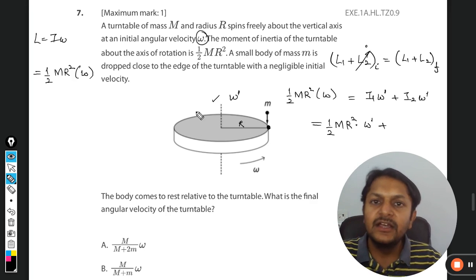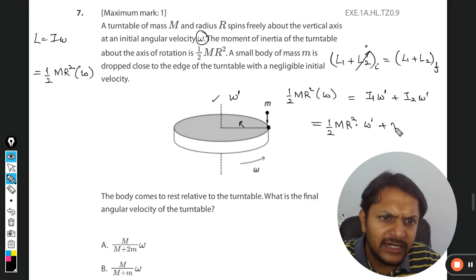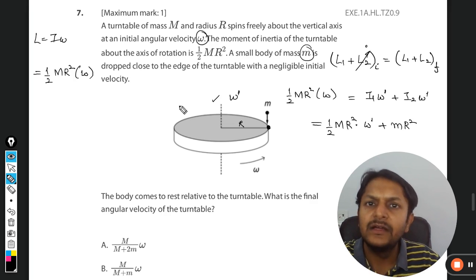around this axis. Thereby we can say that the formula for the moment of inertia will be very simple, which is mR². So this can be taken as small m, but the radius is the same, radius is the same.